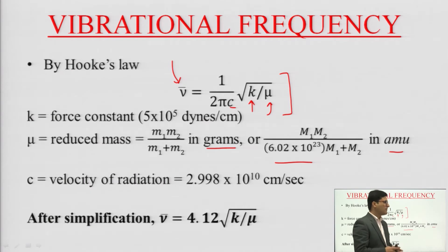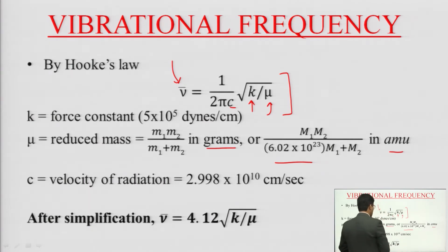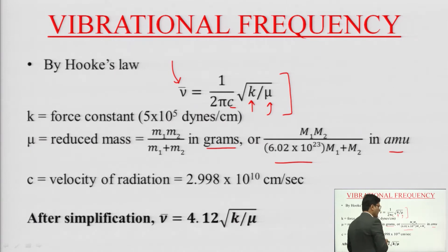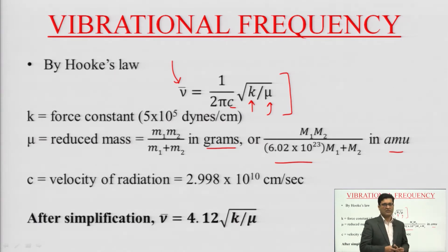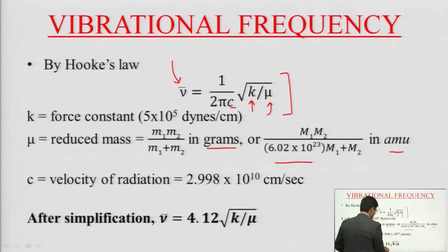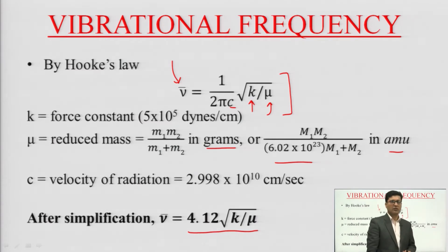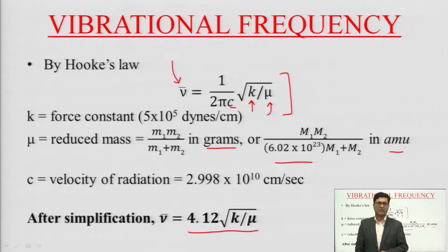The velocity of light c is 2.998×10¹⁰ centimeters per second. After solving all the constants, this equation finally becomes 4.12 times the square root of k over mu, where mu is in atomic mass units.